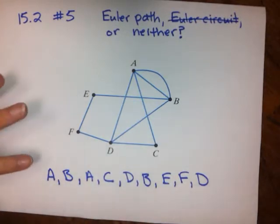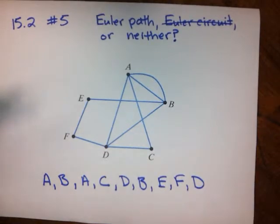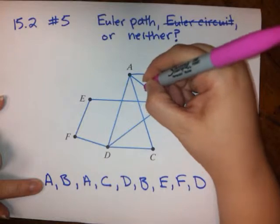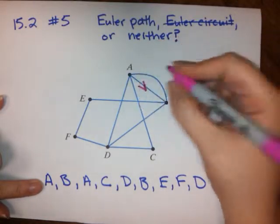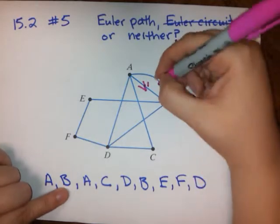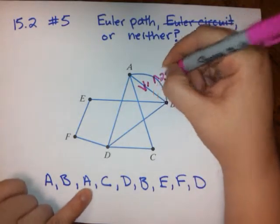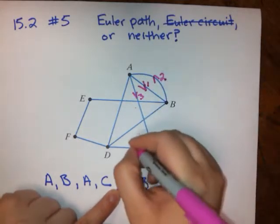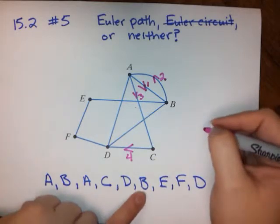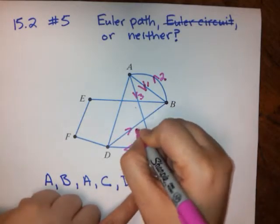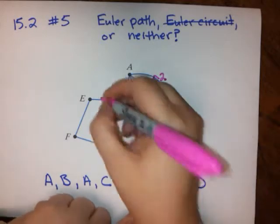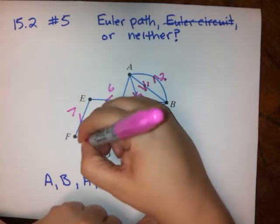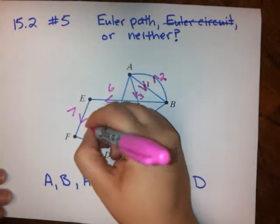Let's number the edges in the order that they give them to us and see if what we have is an Euler Path. They are saying A to B — that's edge 1. B to A is 2. A to C is 3. C to D is 4. D to B is 5. B to E is 6. E to F is 7. And F to D is 8.